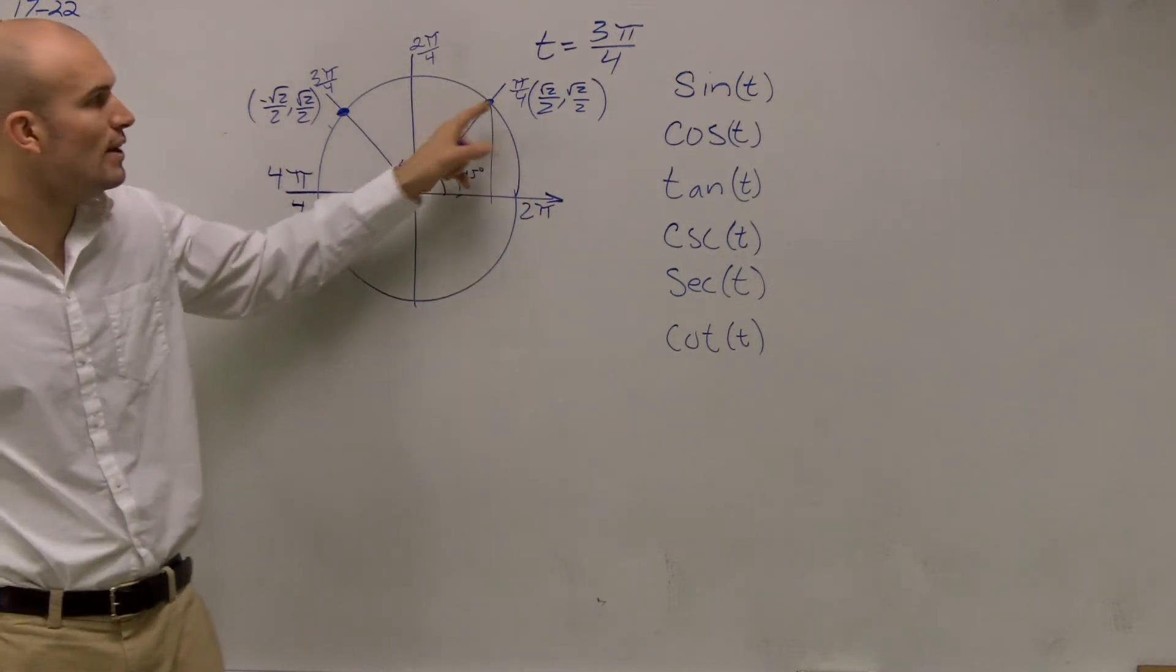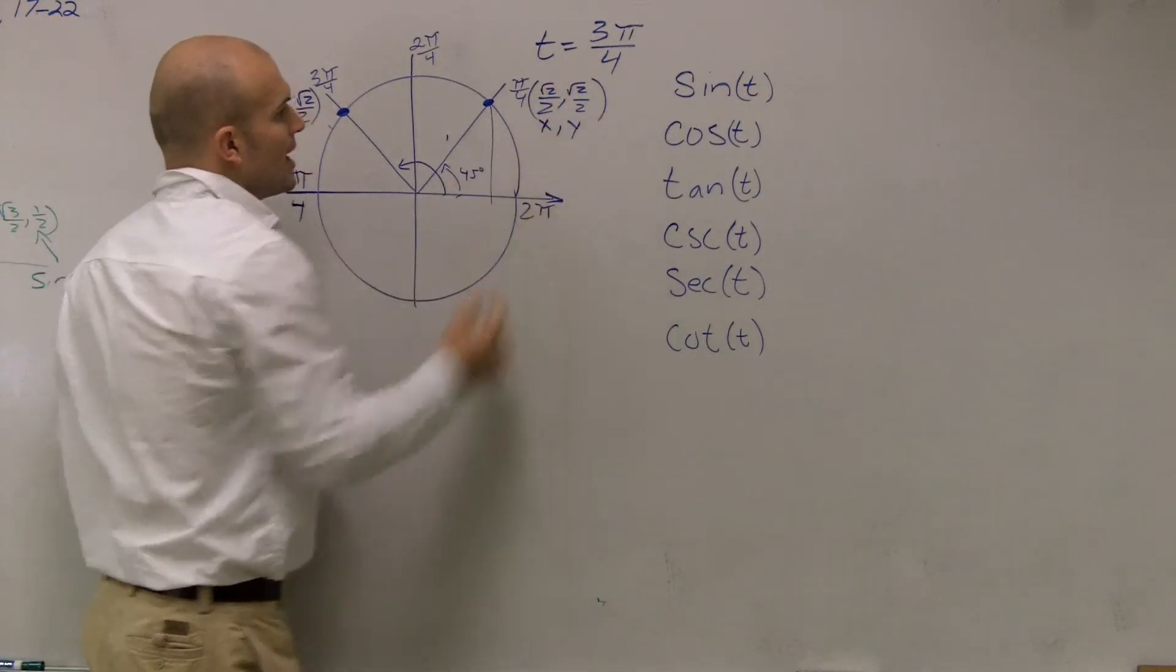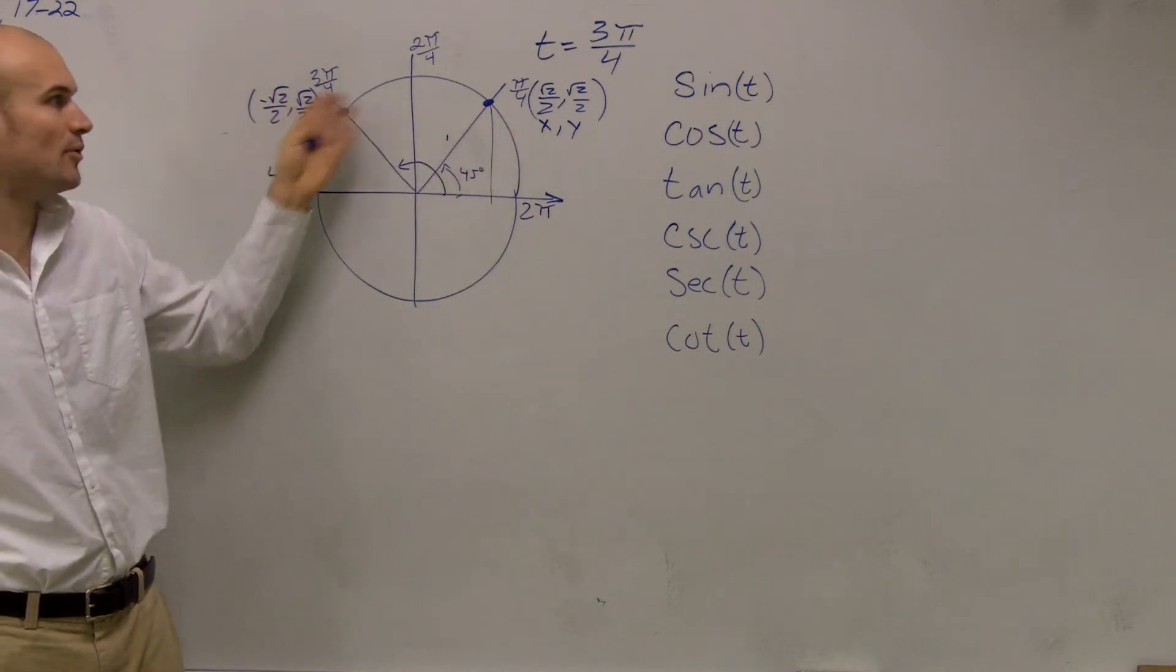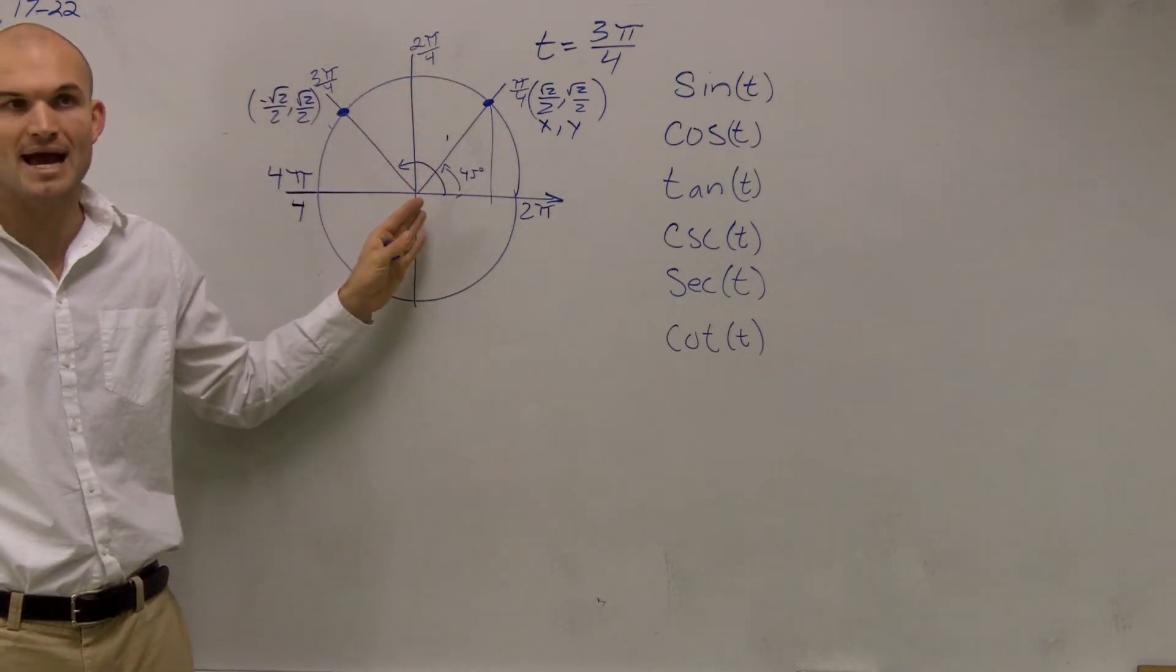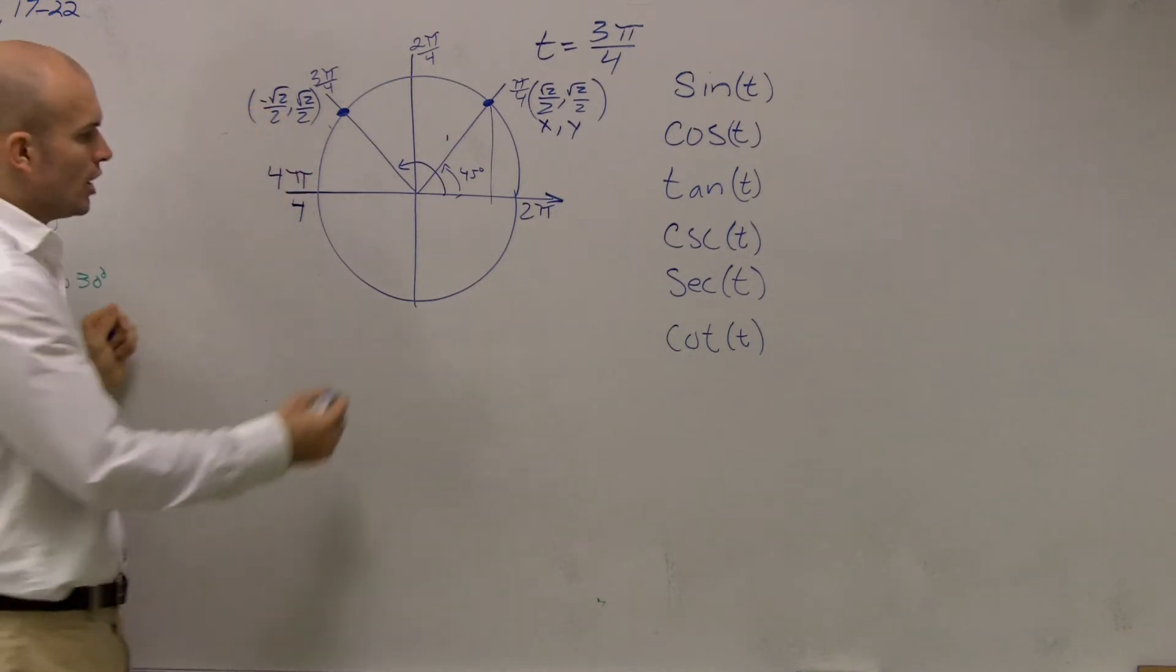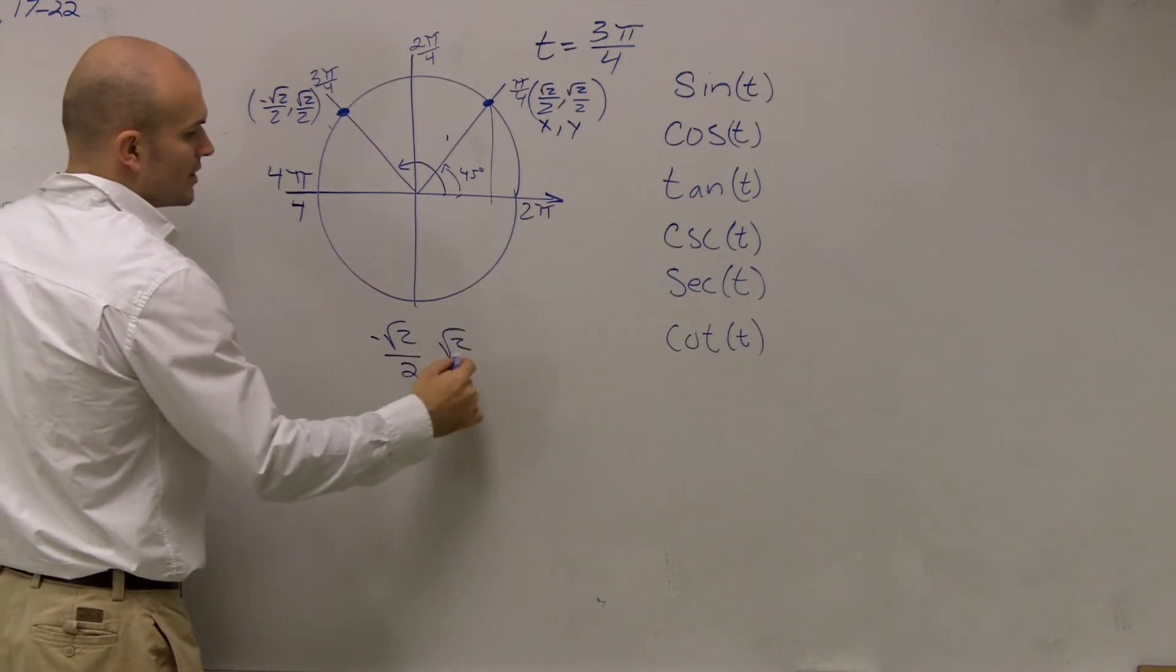So the coordinate point is √2/2, comma √2/2, where this is your x and this is your y. Well, this angle is just a reflection of that point across my y-axis. So therefore, my x coordinate is now negative. So our coordinate point is a negative √2/2, comma √2/2.